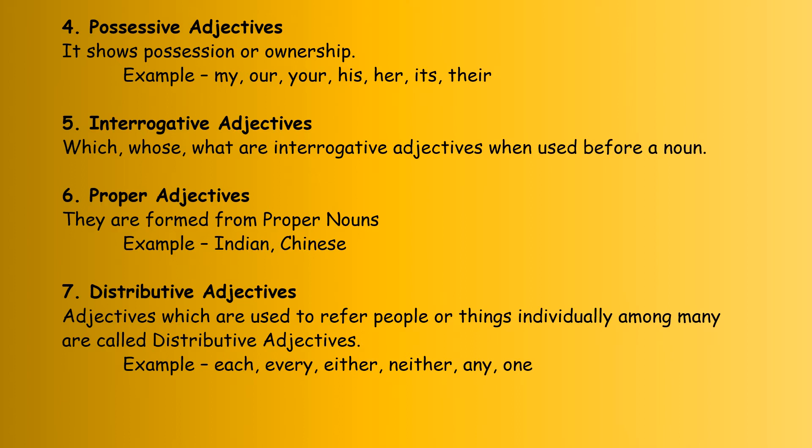The fourth one is possessive adjectives. As you all know, possessive means ownership, belonging, or possession. If a word is showing possession, then it is a possessive adjective. Examples of possessive adjectives are: my, our, your, his, her, its, their — all these words followed by a noun.